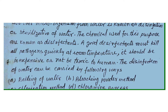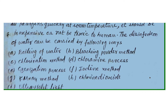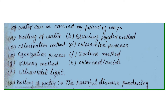The chemical used for this purpose is called a disinfectant. A good disinfectant must kill all the pathogens quickly at room temperature, be inexpensive, and not be toxic. Disinfection of water can be carried out by the following ways: first, boiling of water; second, bleaching powder method; third, chlorination method; fourth, chloramine process; fifth, hydrogen iodination process; sixth, iodine method; seventh, KMnO₄ method; eighth, chlorine dioxide; and tenth, ultraviolet light.